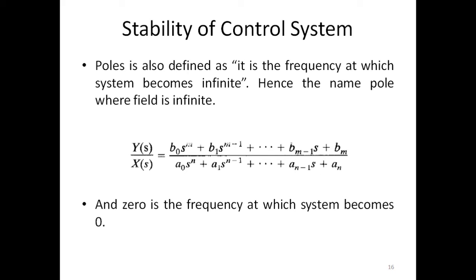Poles are also defined as the frequency at which the system's response becomes infinite — hence the name 'pole,' where the field is infinite. If we substitute s equal to the pole value, the transfer function gives an infinite response. Conversely, a zero is the frequency at which the system response becomes zero: substituting s equal to the zero value gives zero output.